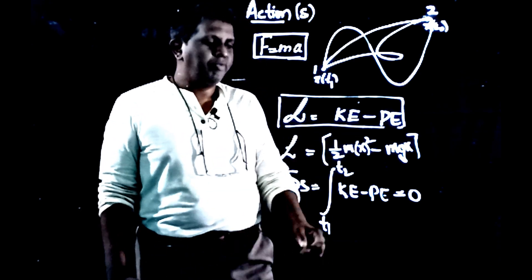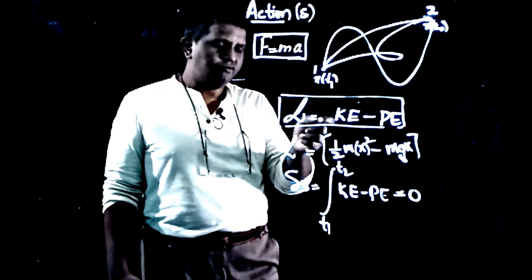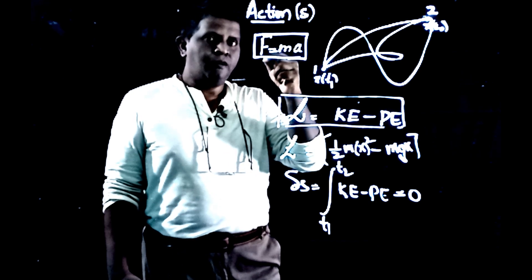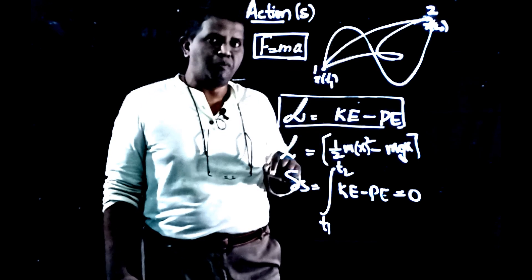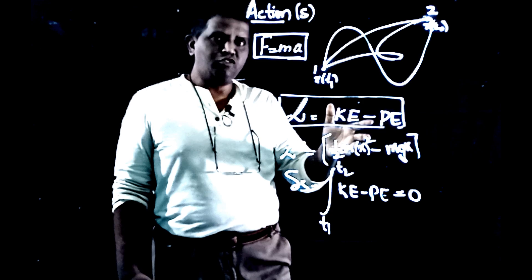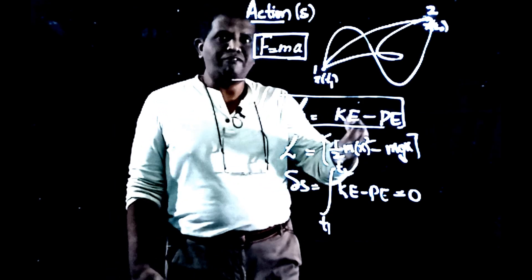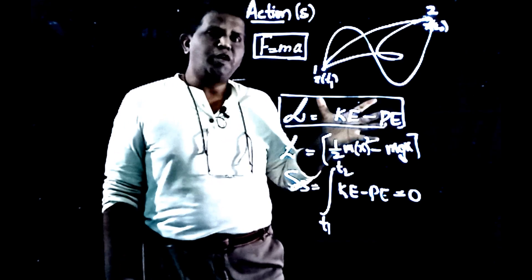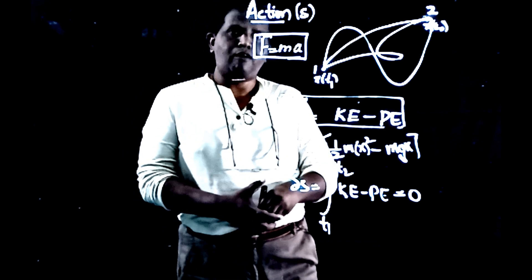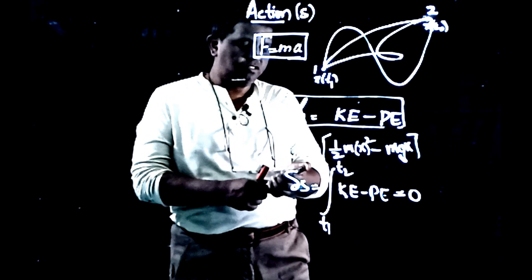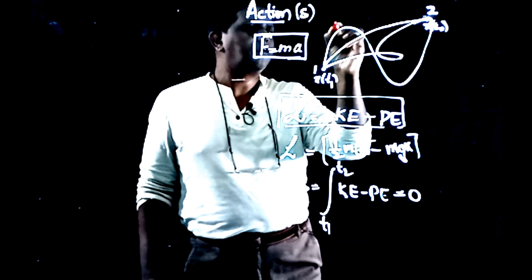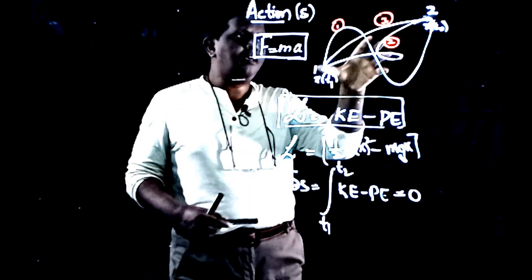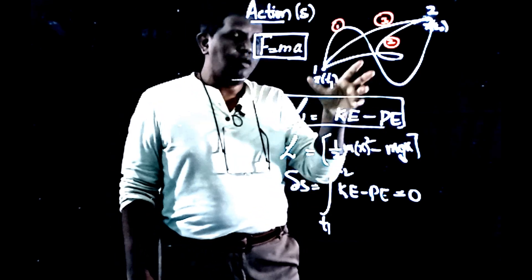The problem here is that in a typical maximum-minimum problem, there is a function with a variable, and we find the variable where the function is maximum or minimum. But here it is a different story. Here the variable is going to be a function itself — it is a function of a function. We are supposed to find the function, and we are supposed to find the path along which the action is going to be minimum.